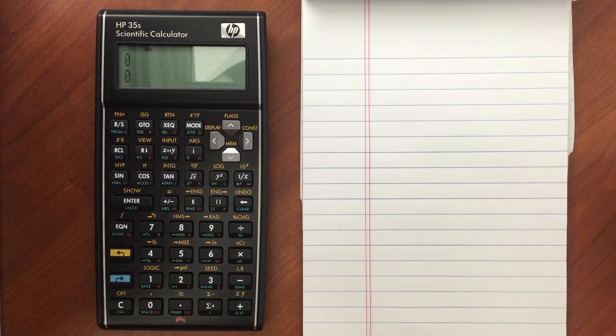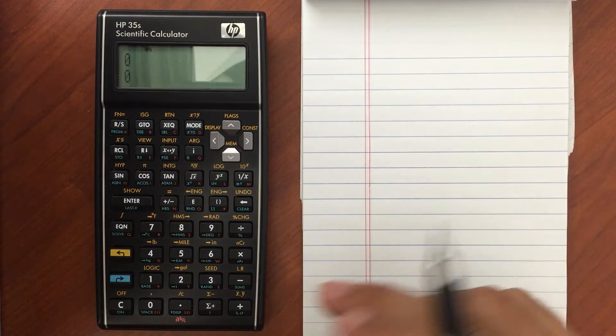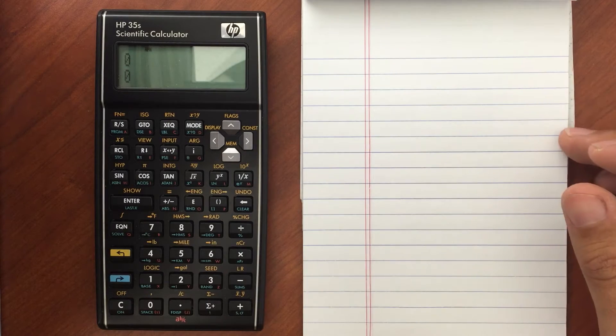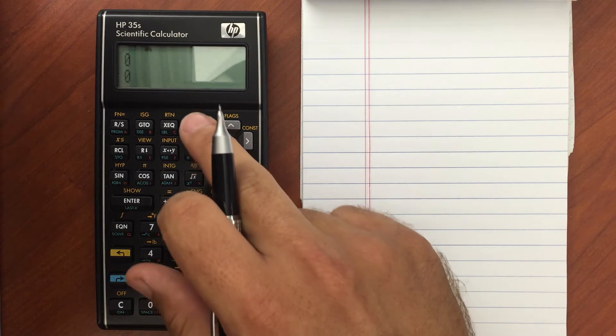So I wanted to do a quick video on reverse Polish notation, just an introduction on how it is implemented on this calculator. If you're buying this calculator, you probably already know what reverse Polish notation is. But if you're looking at it for something like the PE or the FE, it's good to know.